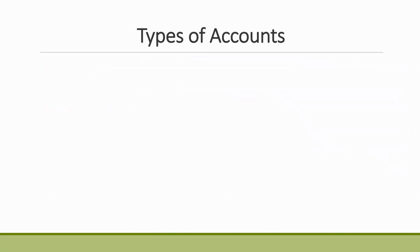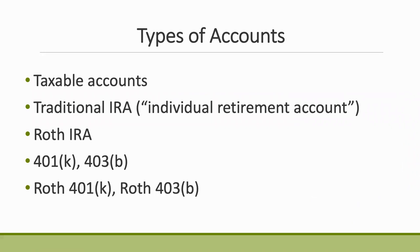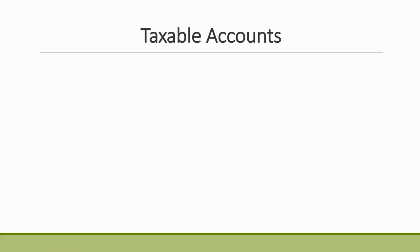Moving on to the primary types of accounts: we have taxable accounts, traditional IRAs, Roth IRAs, 401(k)s, 403(b)s, and Roth 401(k)s and 403(b)s. A taxable account is basically anything that isn't one of those special account types — a regular savings account, or an account you open at a brokerage firm without specifying a special type. We call them taxable because the income you earn in those accounts is generally taxable.